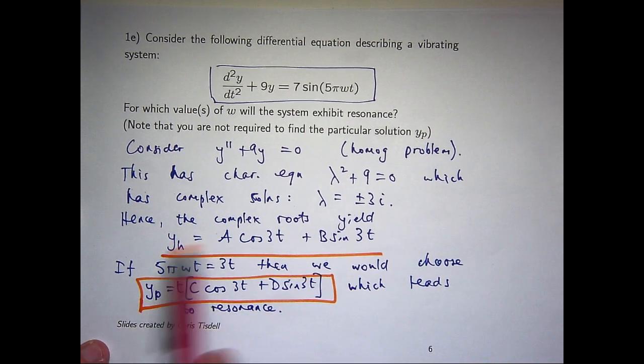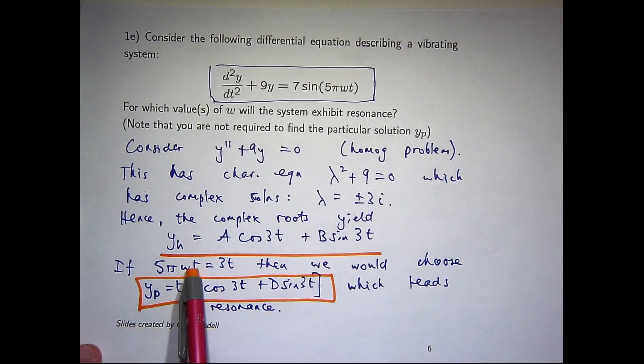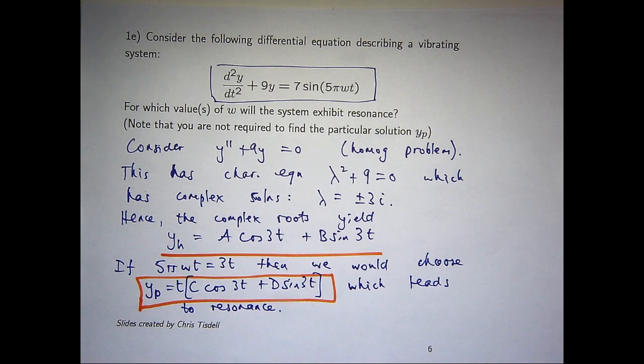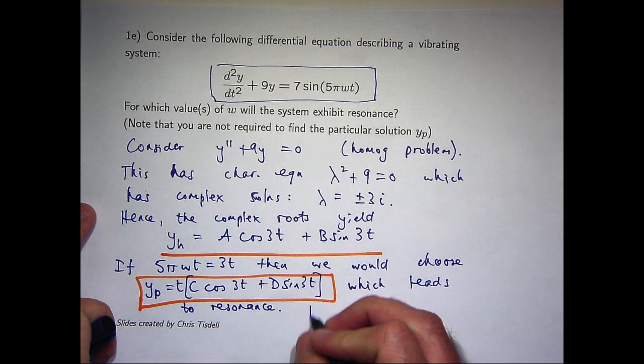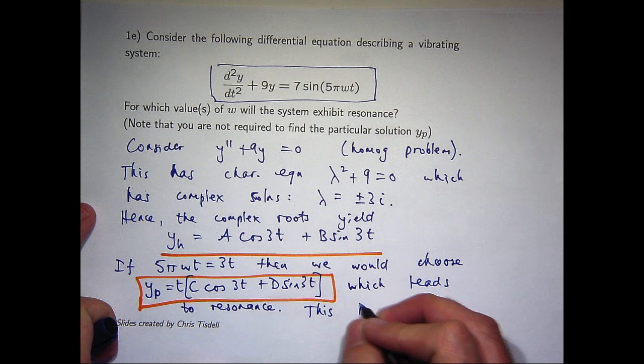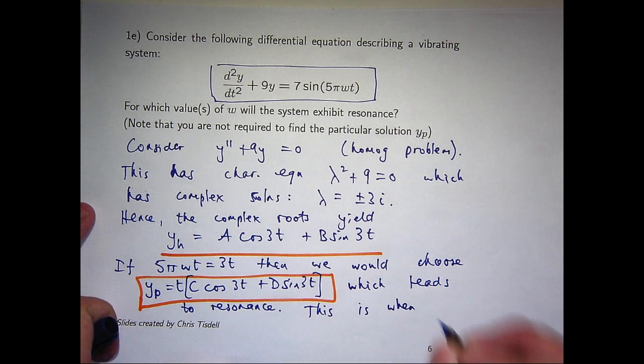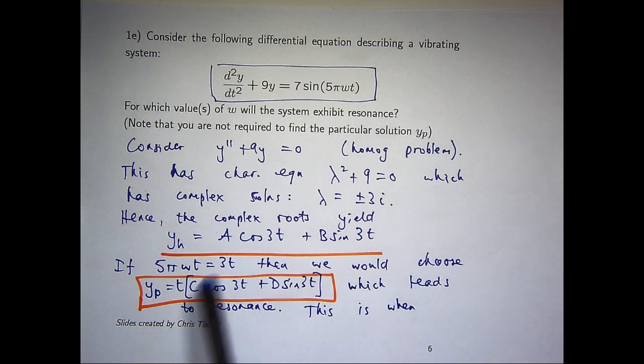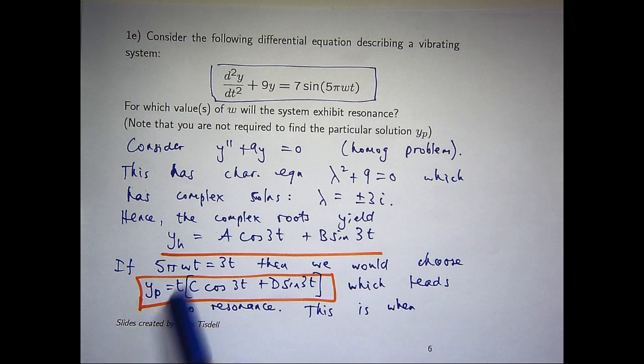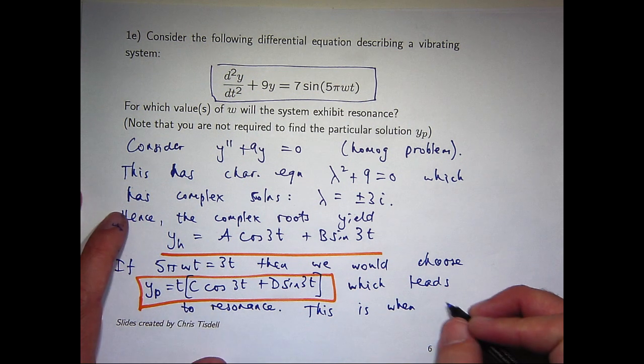So the next question is, well, let's solve this and find the value of omega that makes this true. Well, let's just rearrange. The t's will cancel and omega will be 3.